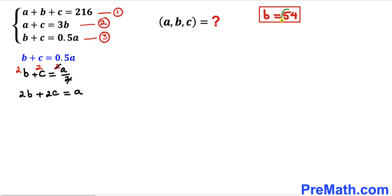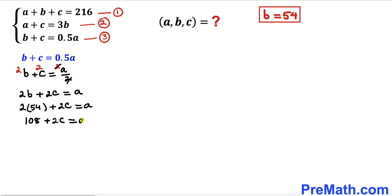We know b equals 54, so substituting that in: 2 times 54 equals 108. Moving 2 times c to the other side, this equation becomes a minus 2 times c equals 108. I will label this as equation number four.